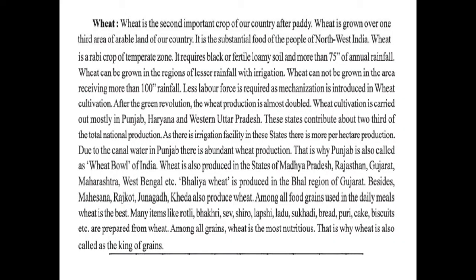Let's take the second topic, which is wheat. Wheat is the main cereal crop in India and the second most important crop after paddy. Wheat is grown over one third of arable land. It is the substantial food of the people of north-west India. Wheat is a rabi crop of the temperate zone. It requires black or fertile loamy soil and more than 75 cm of rainfall. Wheat can be grown in regions of lesser rainfall with irrigation, but cannot be grown in areas receiving more than 100 cm of rainfall.